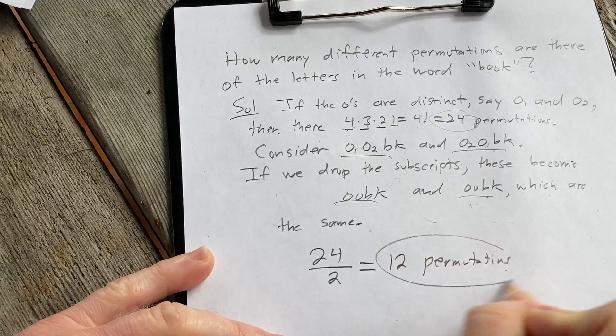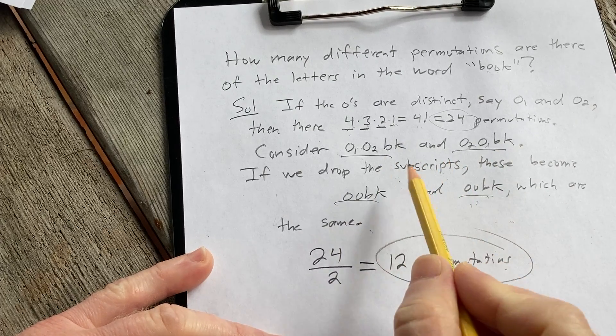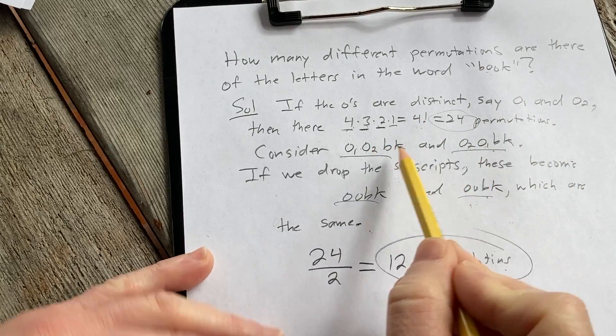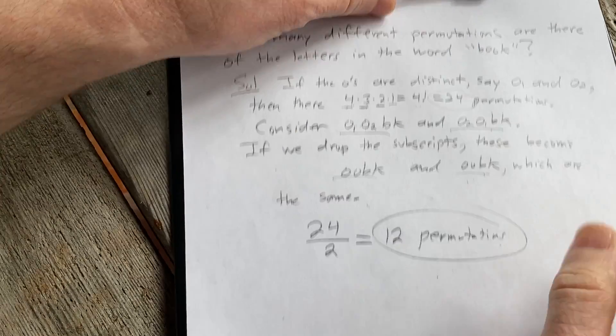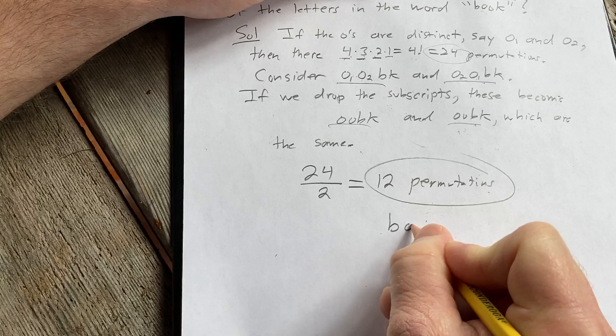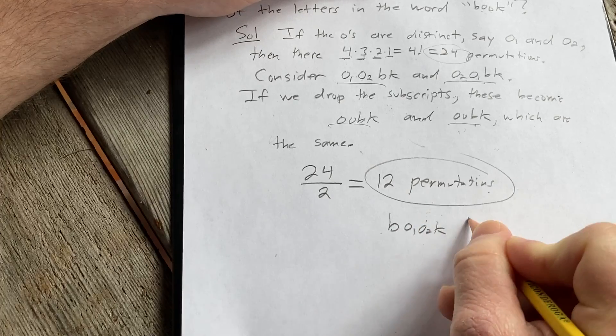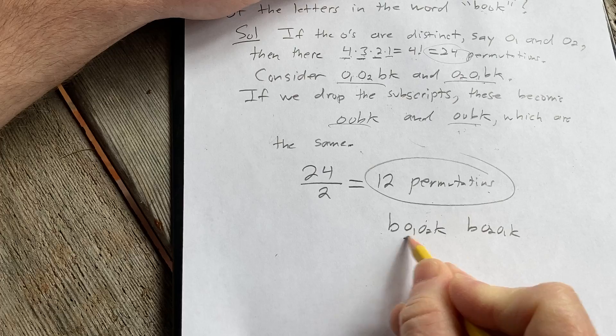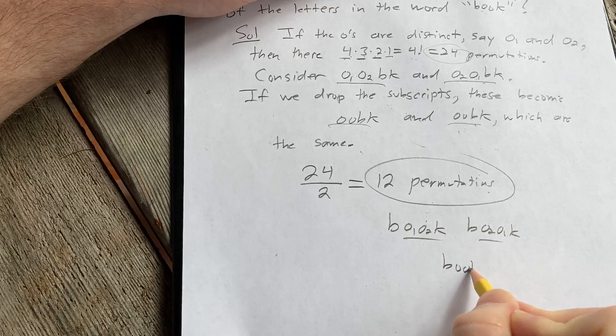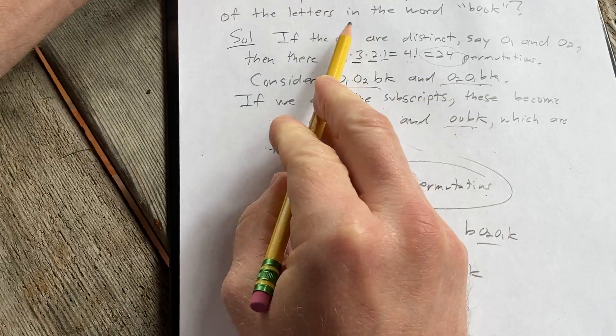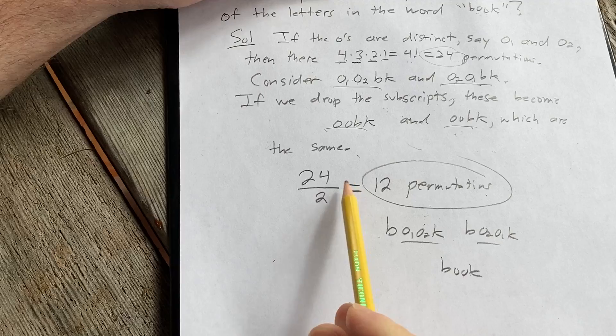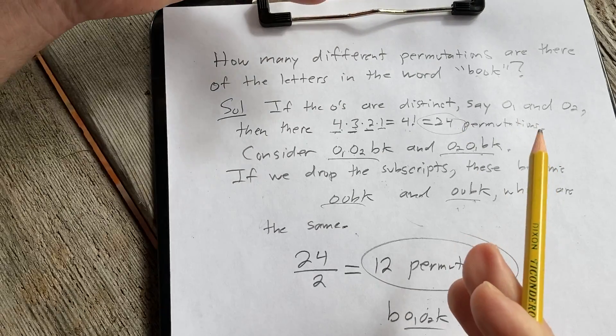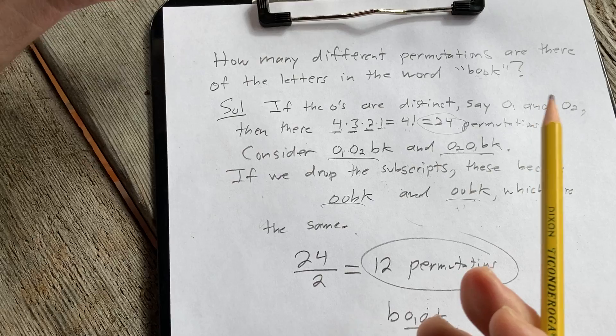And again, that's because each pair of permutations we have is really only one permutation. So if we had another example, say B O1 O2 K and B O2 O1 K, again, this is going to yield the same permutation. So again, we're basically taking our 24 permutations and cutting them in half. So just a nice way to do a problem where there is a formula that you can do without the formula.